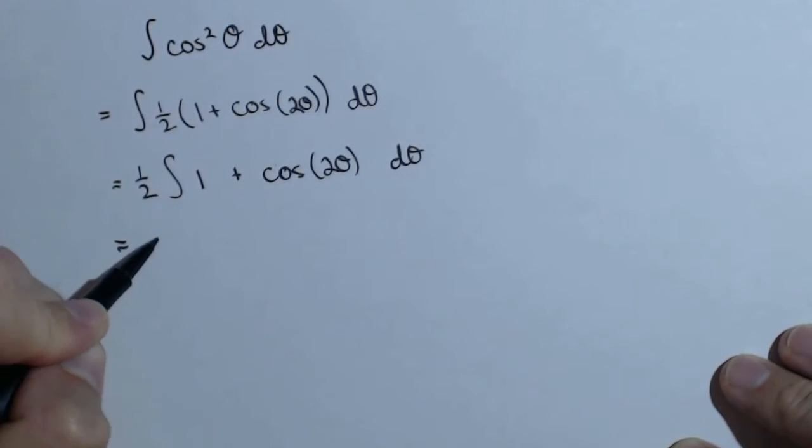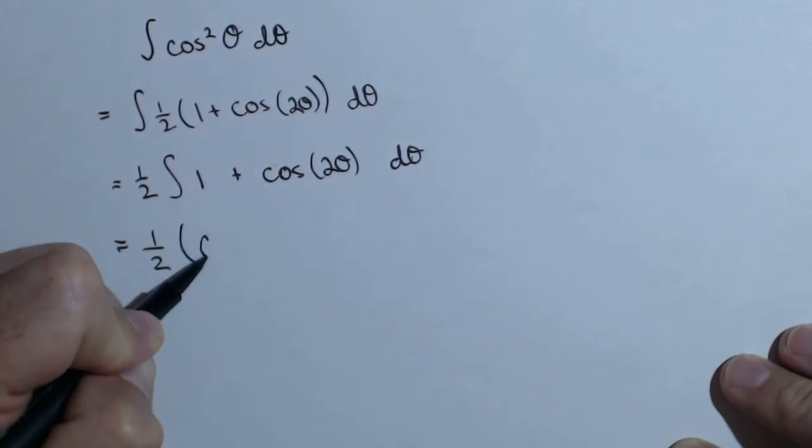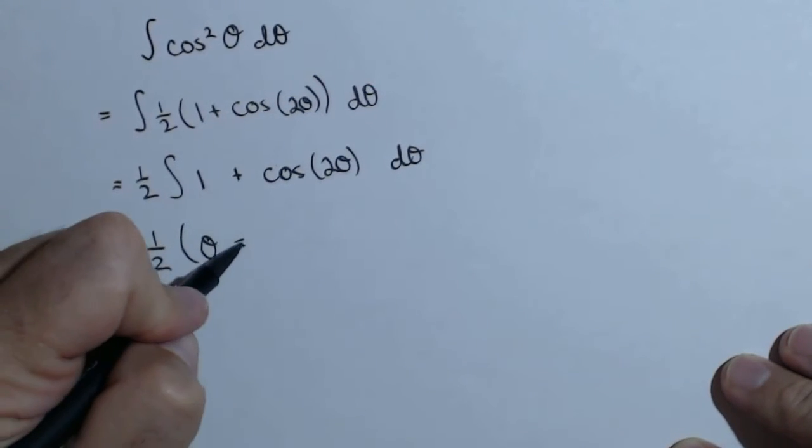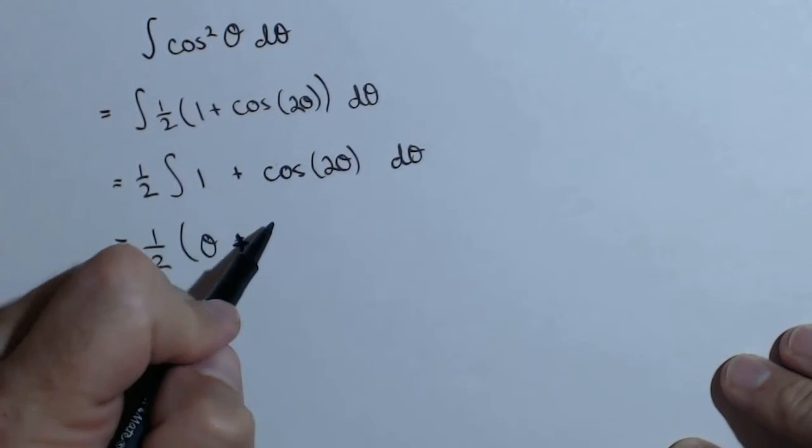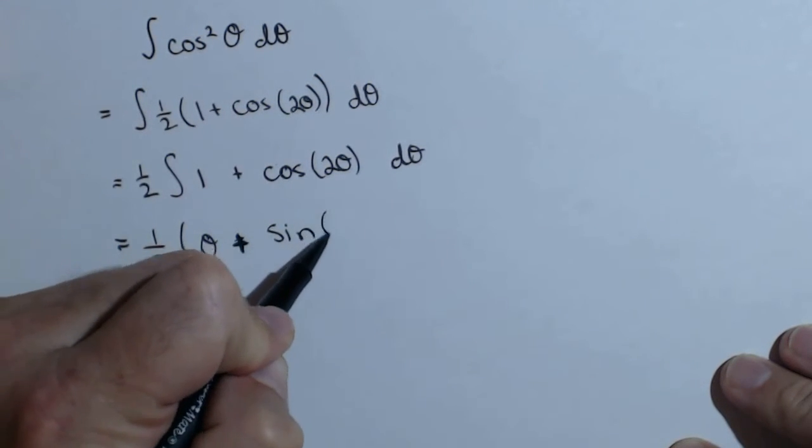I'm going to do a quick version of this. So one half—antiderivative of one is theta, plus antiderivative of cosine is sine of two theta.